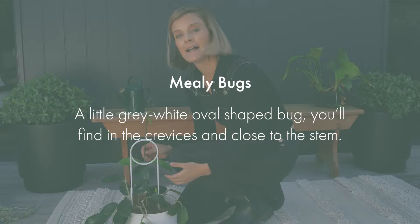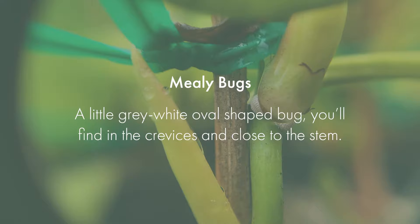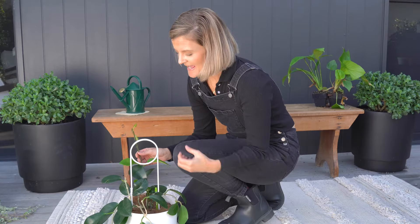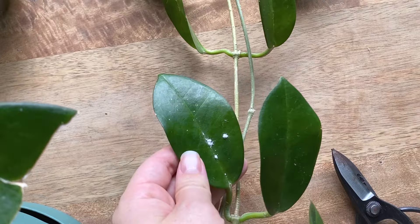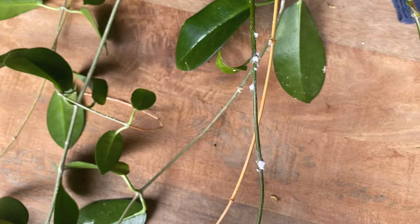Mealy bugs are a little grey-white oval shaped bug and you often find them in between the crevices of your plants, under the leaves and anywhere closest to the stem. Once they settle in they form a white cotton candy-like substance and they will take over your whole plant — it's pretty sneaky. These fuzzy little vampires set up home in your plant's foliage and they suck the life from them, causing stunted growth, yellowing and sick-looking foliage on your houseplants.